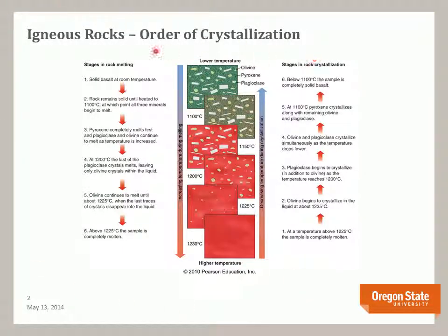This model shows the order of crystallization for minerals from a melted rock. Starting from a higher temperature, the sample is completely molten at about 1225 degrees centigrade. As we cool the magma, crystallization starts, and the first mineral that crystallizes is olivine. This is followed by crystallization of plagioclase around 1200 degrees, and then olivine and plagioclase continue to crystallize as the temperature drops.